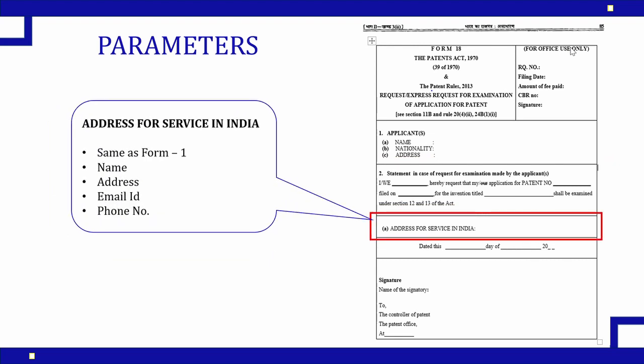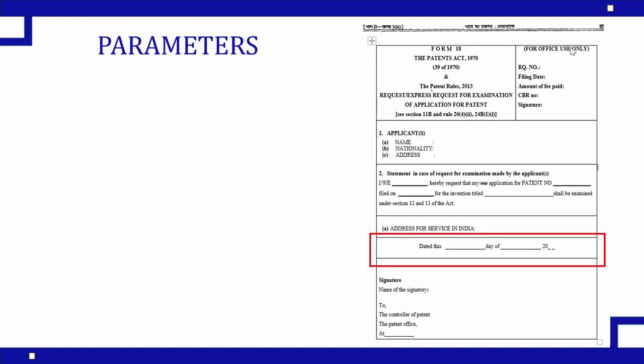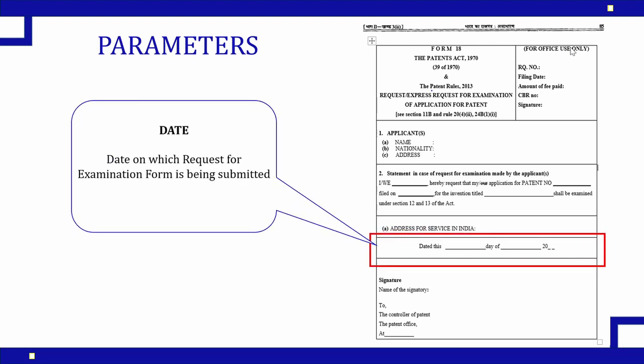The next field is address for service in India. At the time of application in Form 1 you submitted communication details — the address, email ID, and phone number for communication so that the registry could send documents or updates regarding patent filing. The same details need to be replicated here. The name of the recipient should be mentioned as stated in Form 1.